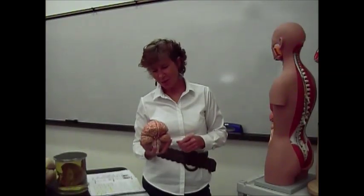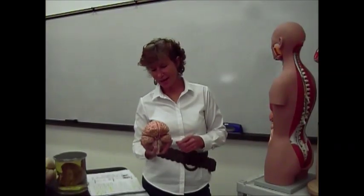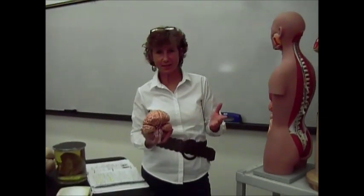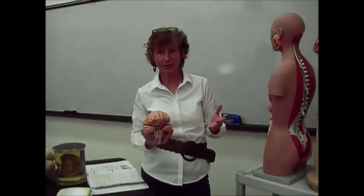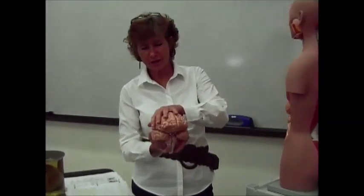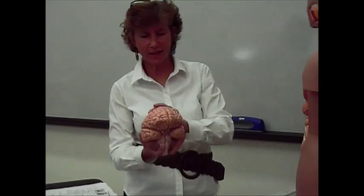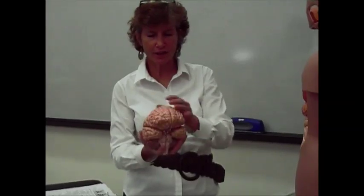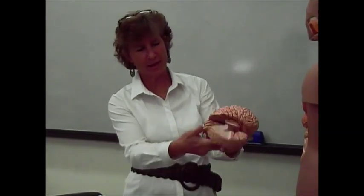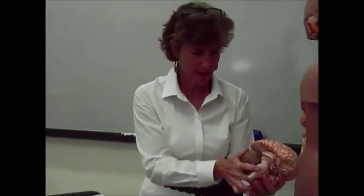Now we want to talk about the brain. There are three basic parts of the brain that you need to know. First, you have all this little curly, convoluted area that goes along the front and the back, and that's called the cerebrum.